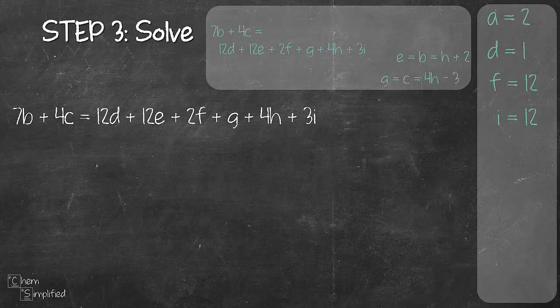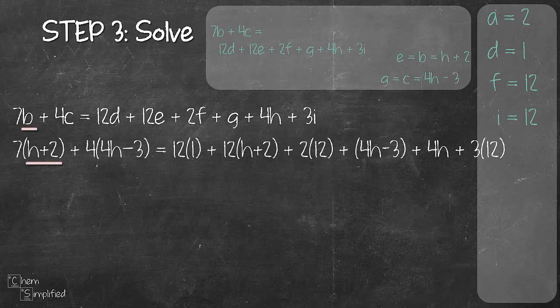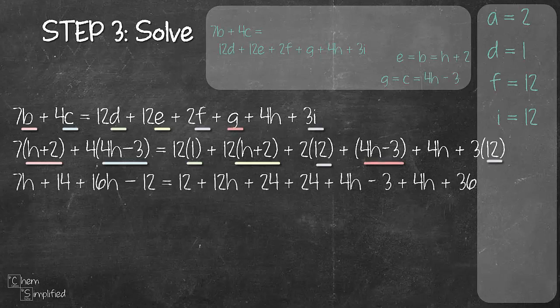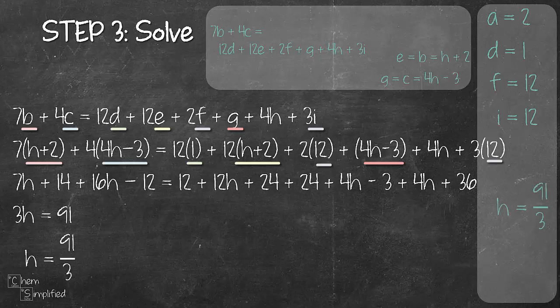So subbing in h plus 2 for b, 4h minus 3 for c, 1 for d, h plus 2 for e, 12 for f, 4h minus 3 for g, and 12 for i, expand out the equation and simplify and we get h equals 91 over 3.